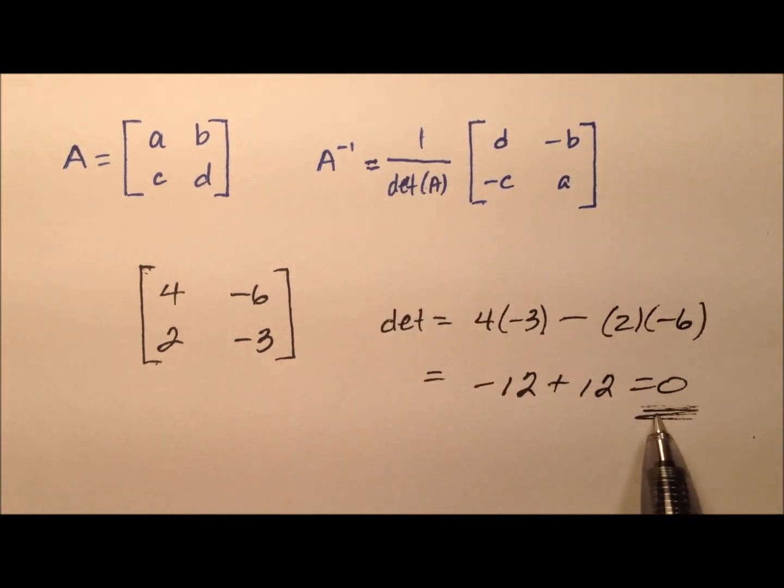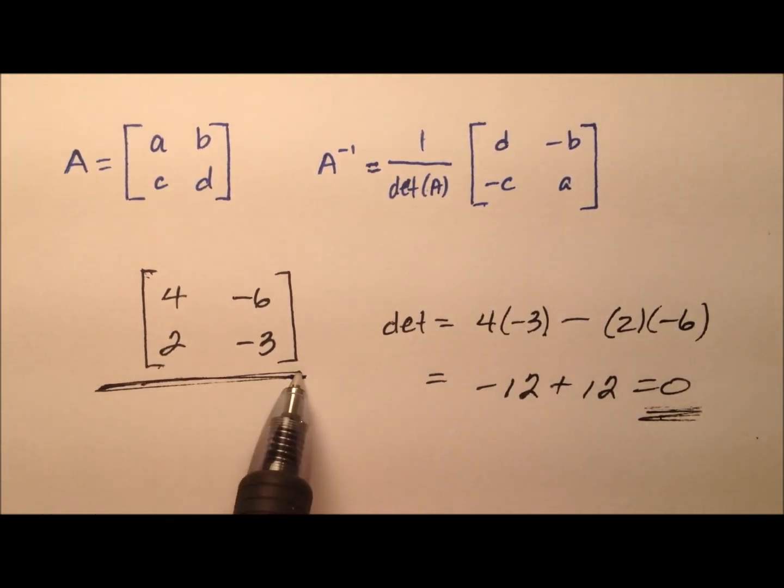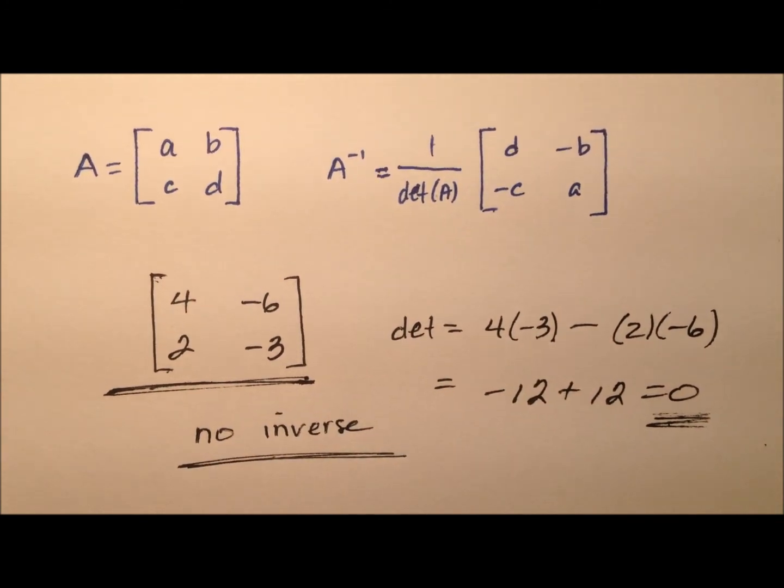So division by 0, that's no good. So what this indicates is this matrix is what we call a singular matrix, and it has no inverse. So there's nothing else we can do, so we're done.